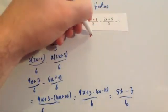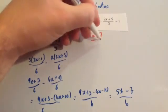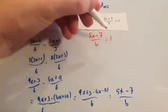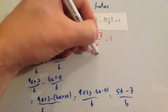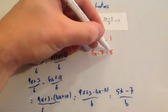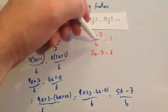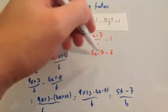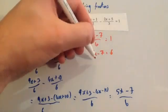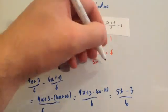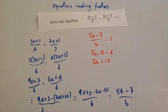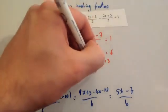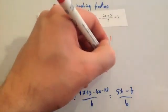So instead of that expression, we're going to write 5x minus 7 divided by 6 equals 1. We're going to times both sides by 6, so you're going to get 5x minus 7 equals 6, because timesing by 6 gets rid of the divide by 6. Add 7 to both sides, so you get 5x equals 13. Dividing by 5: 13 divided by 5 equals 2.6, so x equals 2.6.